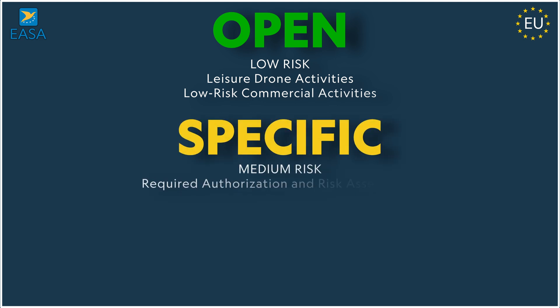The second category is the specified category. It is a medium-risk category and requires some authorization and a risk flight assessment. For example, if you want to fly beyond the visual line of sight or in a no-fly geo zone, that falls into the specified category. Everything beyond the open category will go into the specified or certified category.